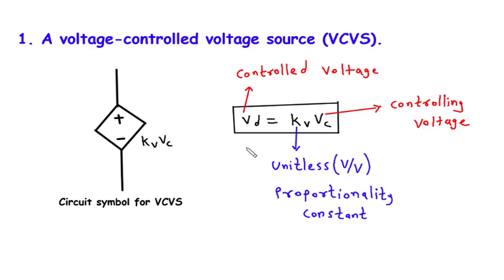By understanding the relationship between the controlled voltage VD and the controlling voltage VC, we can adjust the output voltage with precision using the proportionality constant K. The VCVS has a wide range of applications, including amplifiers, oscillators, and filters, where it enables us to manipulate signals, generate waveforms, and implement selective frequency response.